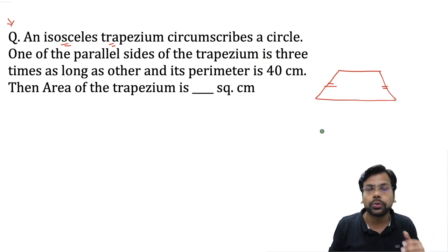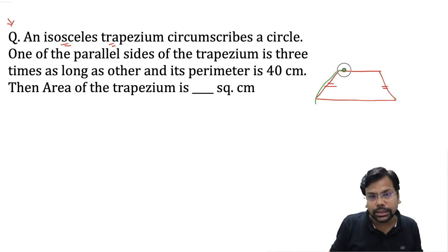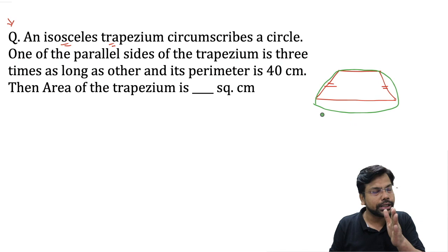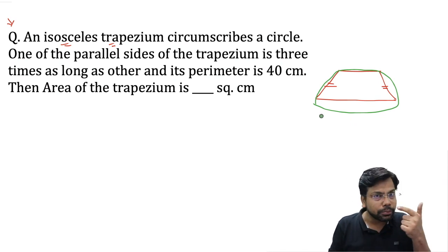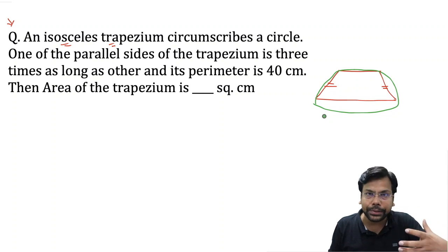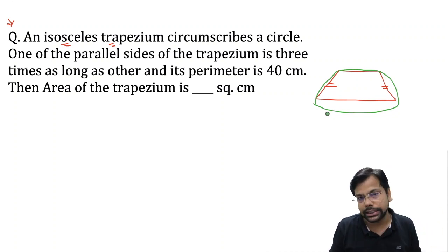There is one more way to describe an isosceles trapezium. If there is a circle circumscribing a trapezium, it is always isosceles. If someone says a circle has a trapezium on its vertices, then this is also an isosceles trapezium.